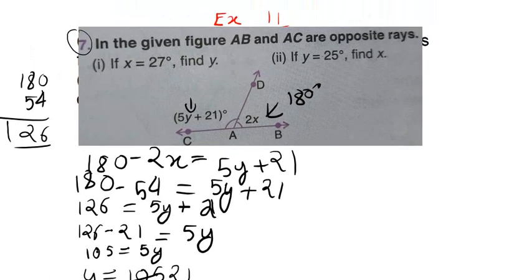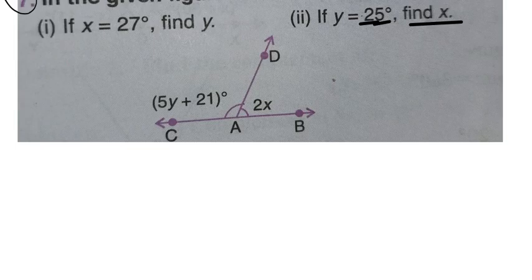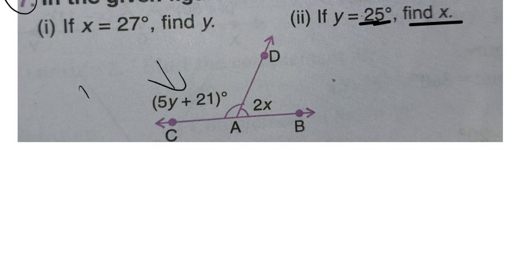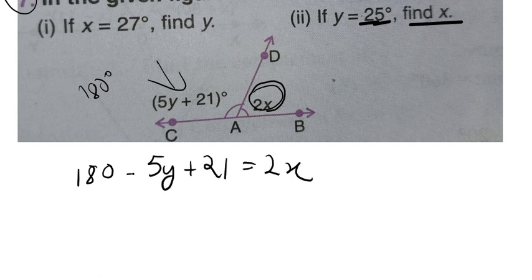Now, in the next part of this question, it is, if y is equal to 25 degrees, then find x. So, same thing, we can put the value of y in this equation, this 5y plus 21 and subtract it from 180 degrees. Now, we can solve it in this way, like see here, we can write it as 180 minus 5y plus 21 is equal to 2x.